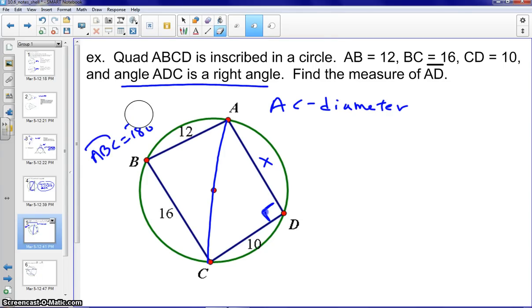Oops, pardon me, marked that the wrong spot. As well as arc ADC would also be 180 degrees. Therefore, we conclude that the inscribed angle B would be 90 degrees.